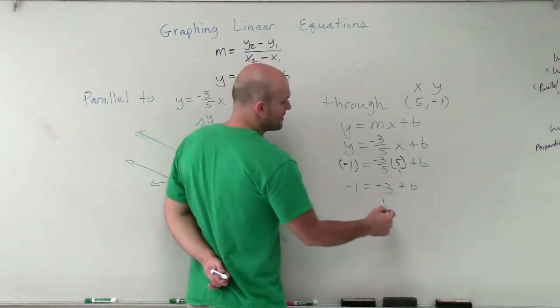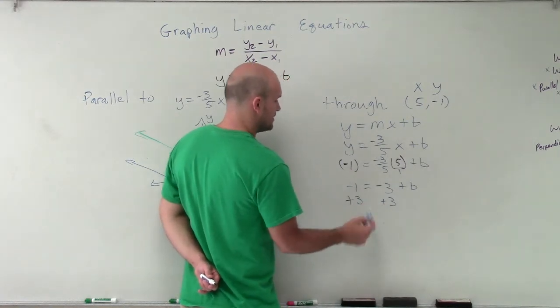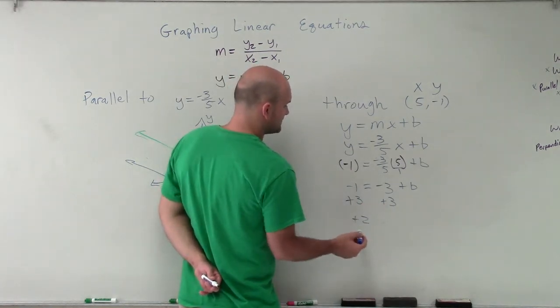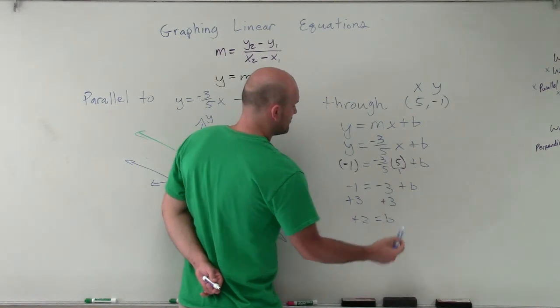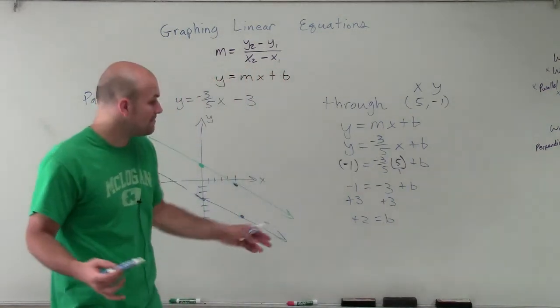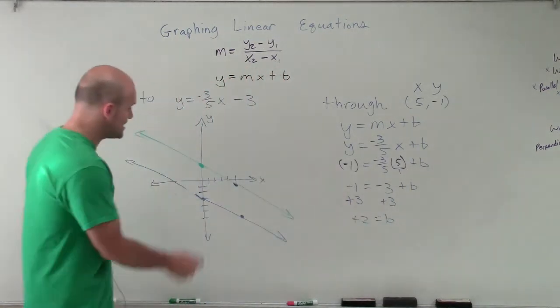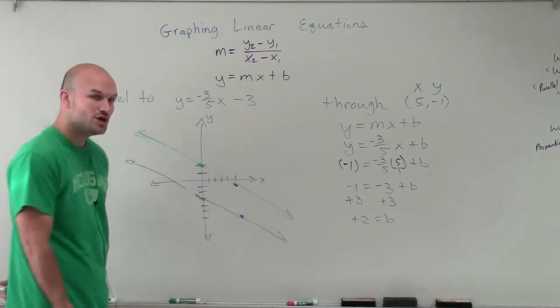Now I use my inverse operations to solve for b. And therefore, I get positive 2 equals b. So therefore, I now know that my y-intercept, my new y-intercept, is actually at 2.